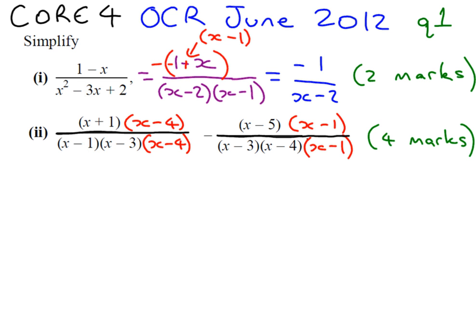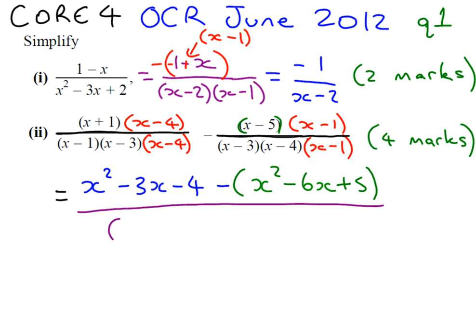So now that we have a common denominator, we can expand the first double bracket. So x squared minus 3x minus 4 for the first one. Take away, and it's very important here, that for the next two brackets, all of them are negated. So x squared minus 6x plus 5, and now a common denominator of x minus 1, x minus 3, x minus 4.